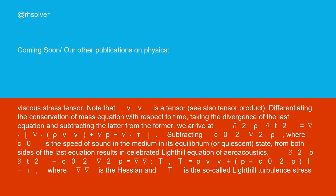Note that vv is a tensor (see also tensor product). Differentiating the conservation of mass equation with respect to time, taking the divergence of the last equation and subtracting the latter from the former, we arrive at ∂²ρ/∂t² = ∇·∇·(ρvv) + ∇·p - ∇·τ.